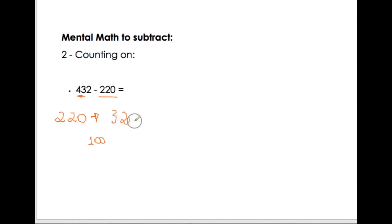But it's not 320 that I want. I want 432. So, then, I will add here plus 100. I will have 420, but it's not 420 that I want. I want 432. Now, I will not add 100 anymore. I will add 10s. I will add 430.